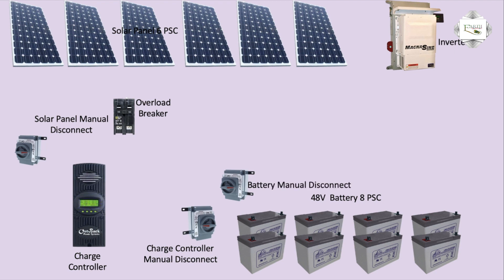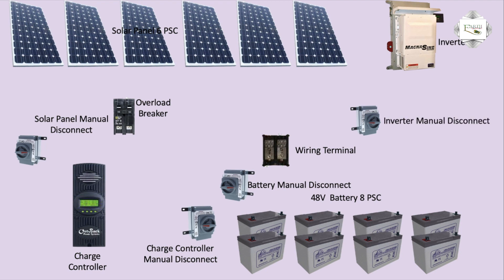The battery manual disconnect connects to the inverter and charging controller. The powering terminal connector allows the inverter to be manually disconnected. Battery and charging controller manual disconnects are arranged in sequence: first battery, then subsequent batteries.